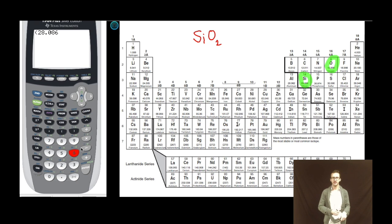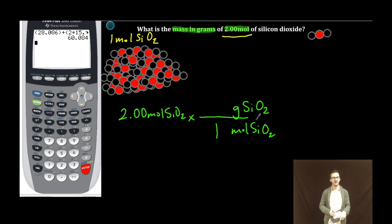Parentheses, 28.086, close parentheses, plus two parentheses two times. And I'm doing two because there's two oxygen here. 15.99. So, we've got one mole of silicon dioxide equal to 60.084 grams.